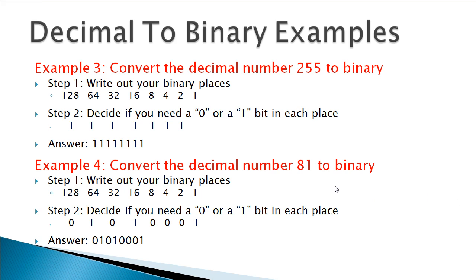Let's do 255, the highest possible 8-bit number. 128 plus 64 gives me 192, plus 32 gives me 224, plus 16 gives me 240, then 248, 252, 254, and finally 255. So 255 in binary is all eight bits set to 1: 11111111. Note: the instructor acknowledged a slide error showing only 7 ones — there should be 8.